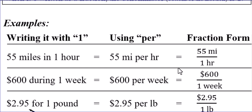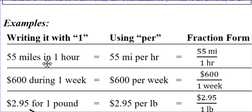I try to come up with some very common real-life examples. I separated this into three different columns: writing the ratio with a one, using the very common word we hear in real life called per, and then the fraction form. So let's talk about a very common unit rate — speed. 55 miles in one hour. That's a unit rate because the second part is one. I could also say 55 miles per hour. In fraction form, that's 55 miles over one hour.